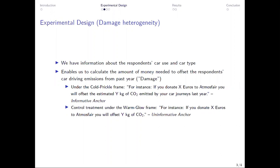And what we also have in the survey is information about the respondents' car use and car type over the past year. And this enables us to calculate the amount of money needed to offset the respondents' car driving emissions from the past year, which we call damage. And under the cold prickle frame, we tell them, for instance, if you donate X euros, and this is then the individual damage amount, you will offset the estimated Y kilograms of CO2 emitted by your car journeys last year. And we call this the informative anchor because it provides a number and information about what that number means.